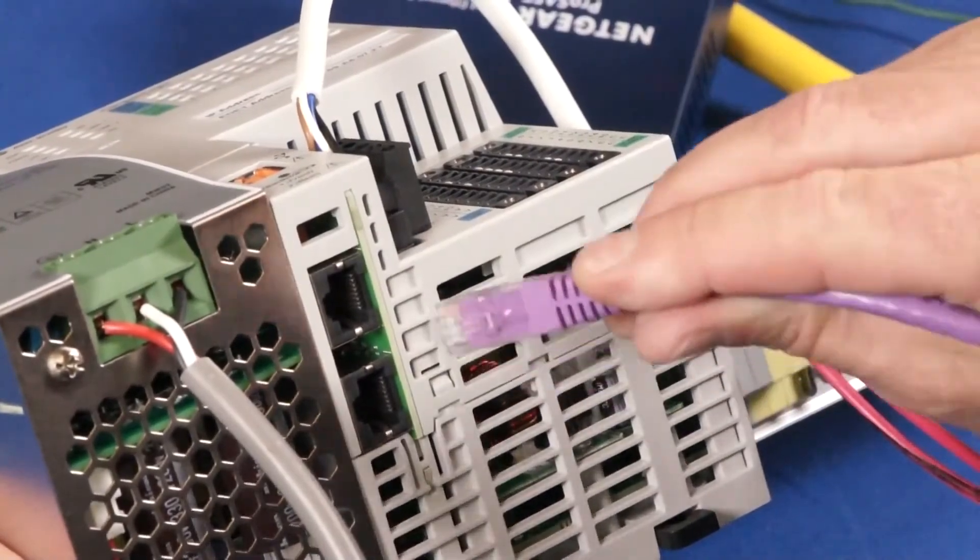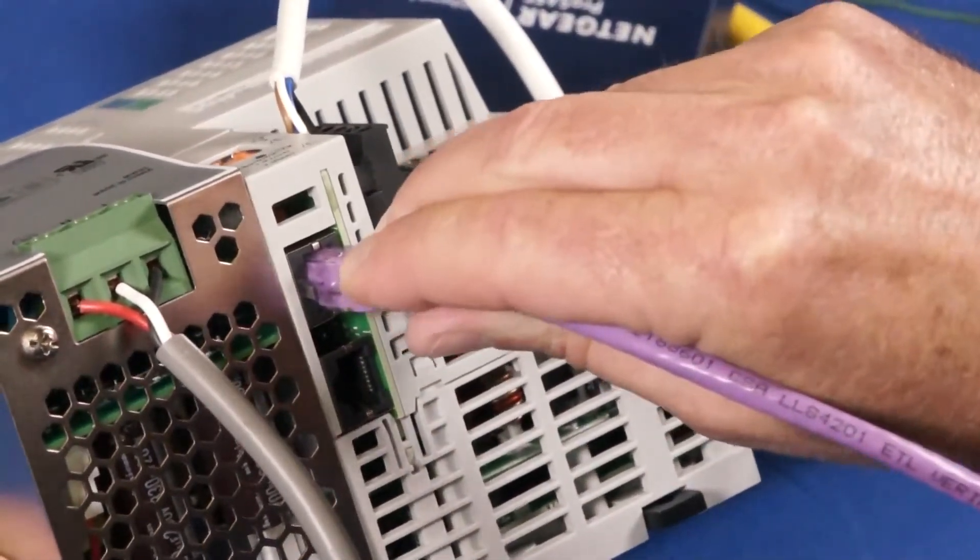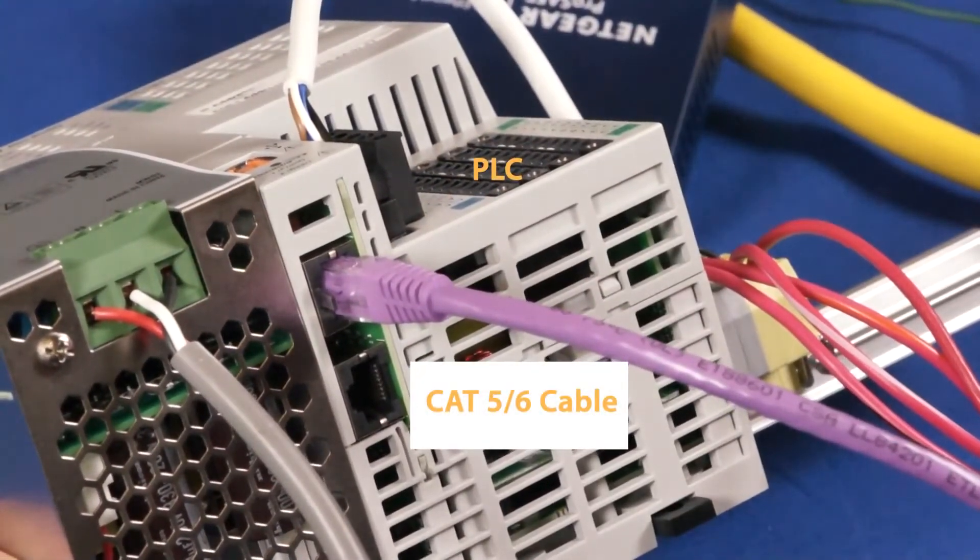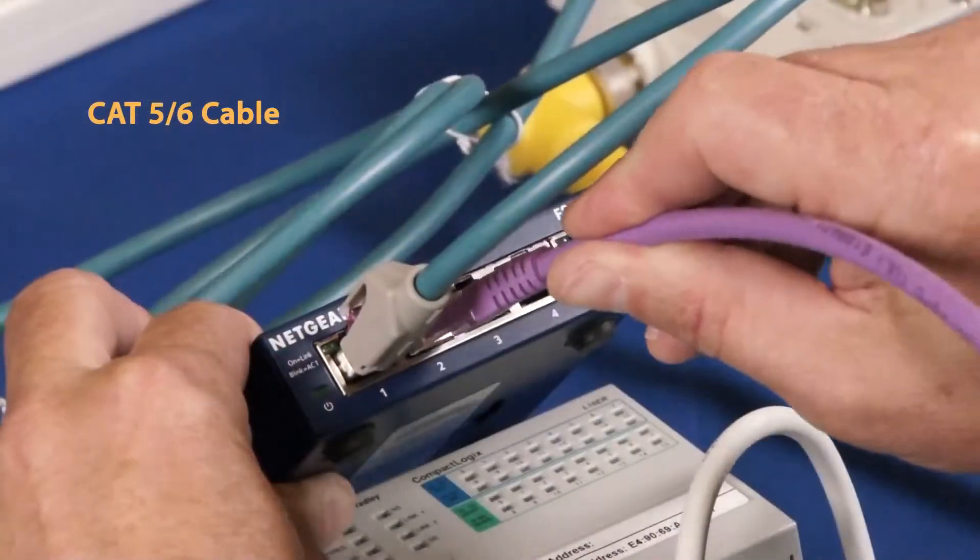Next, connect the PLC to the network. In our case, we use the patch cable RJ45 connector at the PLC and the other at the switch.